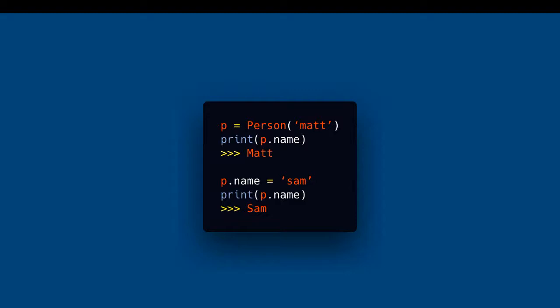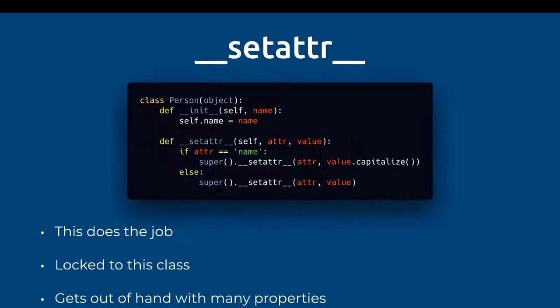This solves our problem. We can pass in Matt with a lowercase m. This is then going to call __setattr__ with the attribute name being name itself and the value being Matt in lowercase. It's going to recognize that this is the name attribute and capitalize the value before setting it. So when we access p.name, we get Matt with a capital M. The same process happens when we reassign to Sam — it capitalizes the value and stores it. However, this solution is locked to this class.